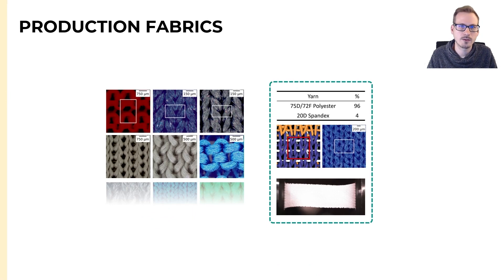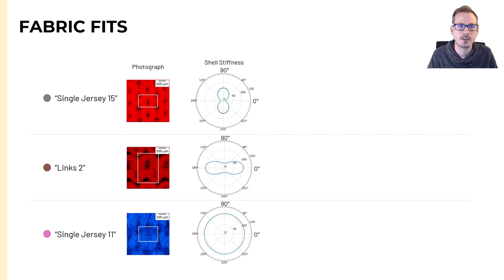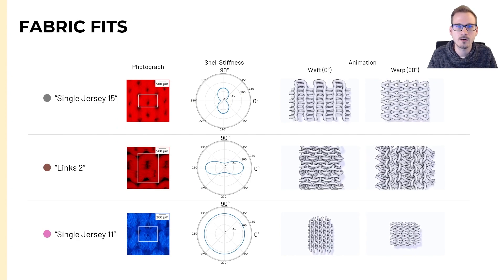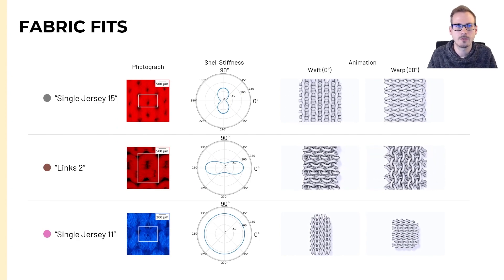Finally, we wanted yarn simulations to even match real fabrics used in production. We compiled and released a dataset that includes yarn composition and physical fabric measurements. The data spans knit fabrics with a wide range of elastic properties. With homogenization in the loop, we then were able to fit yarn simulations to the measurements pretty well.